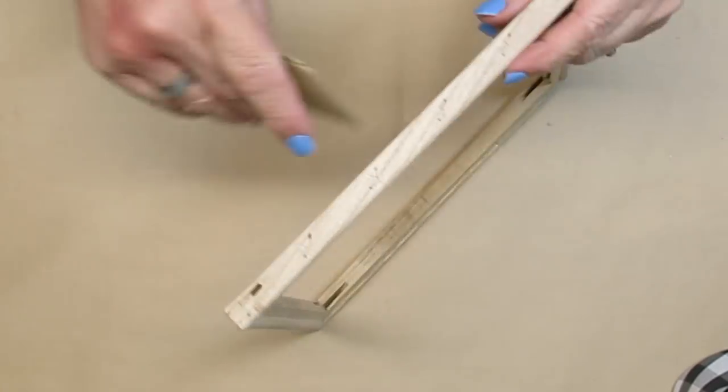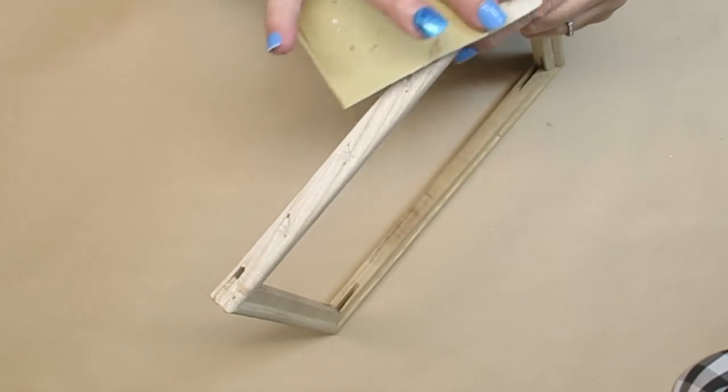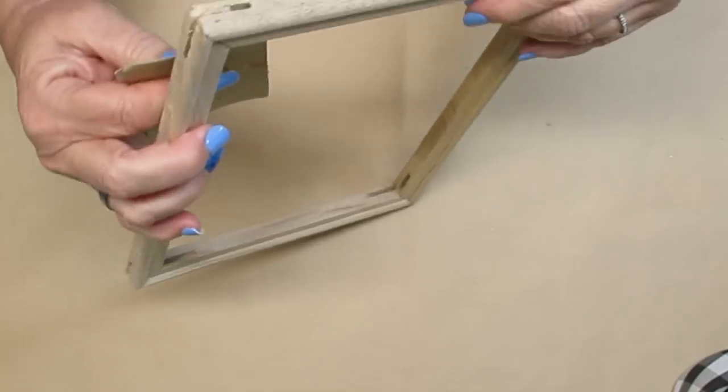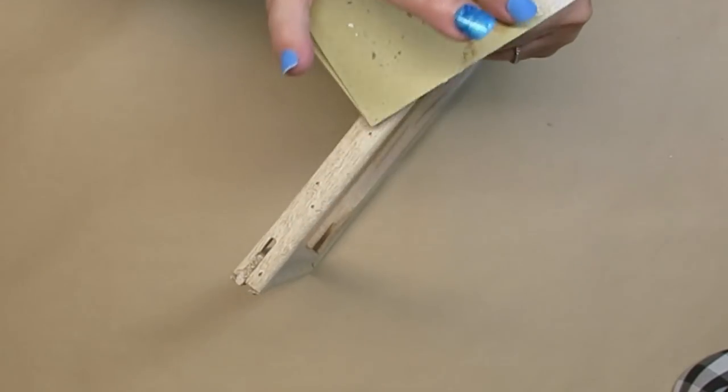These canvases are pretty rough, so I'm just going to take some fine grit sandpaper and just sand down all of the little rough edges, especially around the corners. I don't want to get any splinters from this.